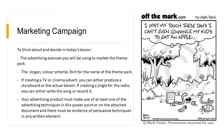So, your marketing campaign. To think about and decide in today's lesson: the advertising avenue you'll use to market the theme park, the slogan, colour scheme, font, and name of the theme park. If creating a TV or cinema advert, you can either produce a storyboard or write the actual advert. If creating a jingle for the radio, you can write the song or record it. Your advertising product must make use of at least one technique from this PowerPoint or the attached document, with evidence of persuasive techniques in any written element.